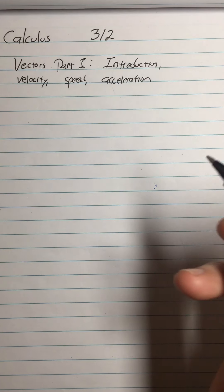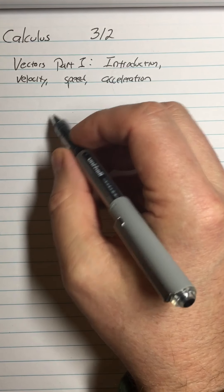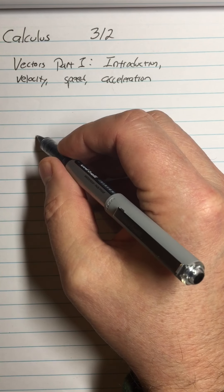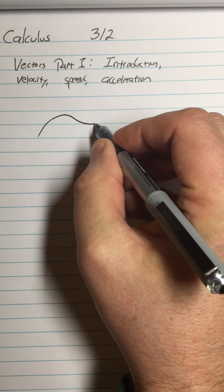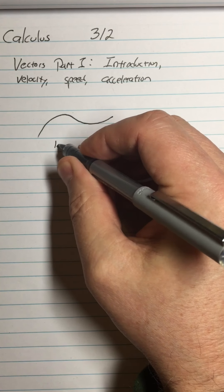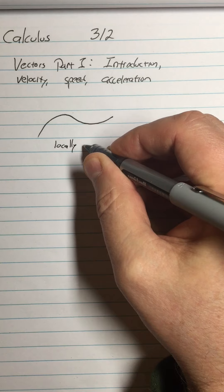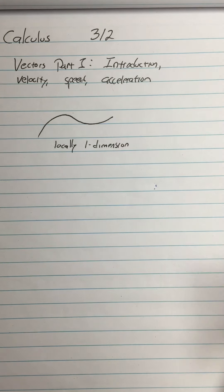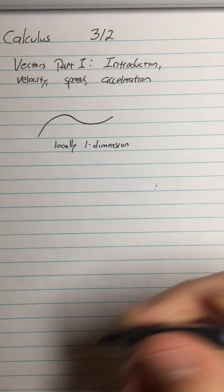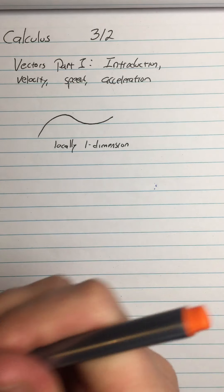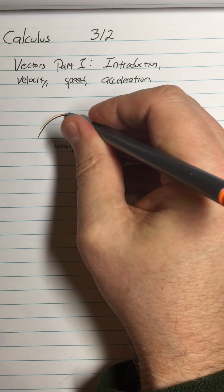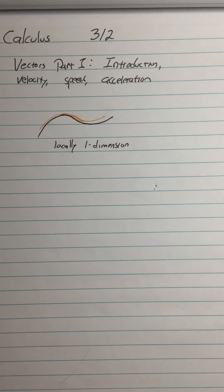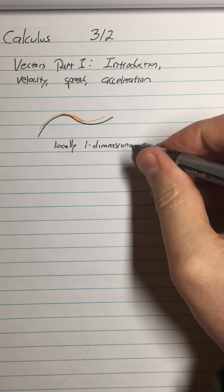So today we start vectors and the reason we're going into vectors is that in the past when we've done motion problems we've always been constrained to what I call locally one-dimensional motion and that's because you have one variable for time and one variable for position and that's it. So this is locally one-dimensional motion and we can go back and forth on it but we can't go off the track, locally one-dimensional.